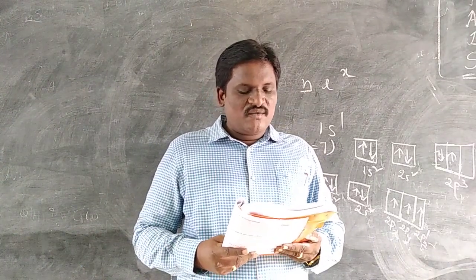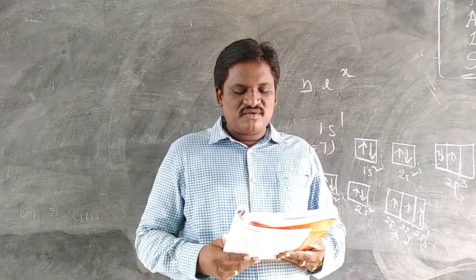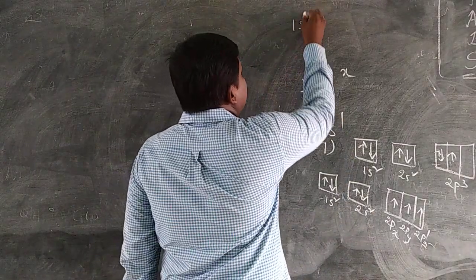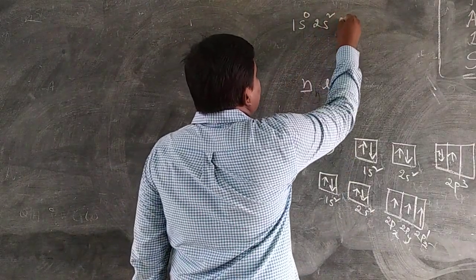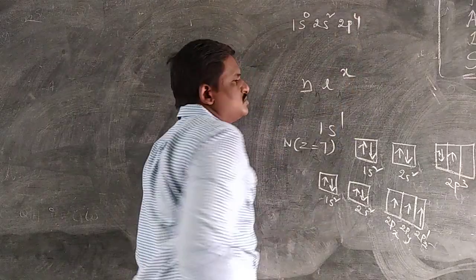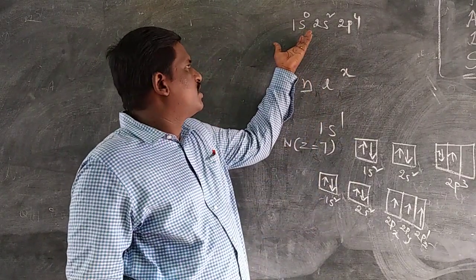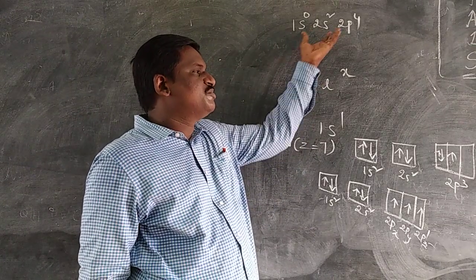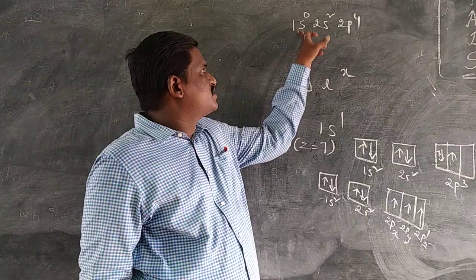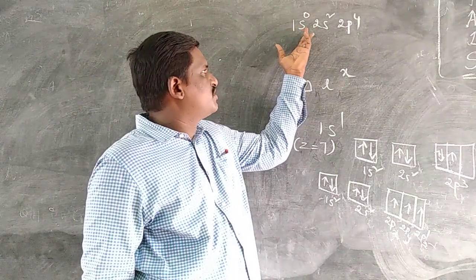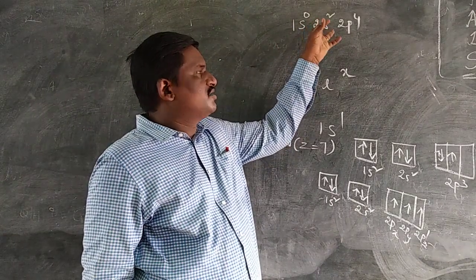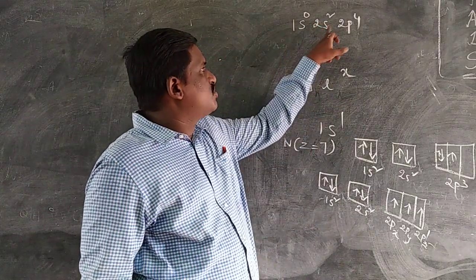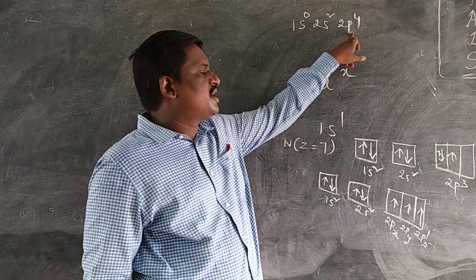Next: which rule is violated in the electronic configuration 1S0, 2S2, 2P4? This violates the Aufbau principle. The Aufbau principle means the lower energy level should be filled first. Here, 1S0 means the lower energy level is not filled first — you are directly going to 2S2. That is why the Aufbau principle is violated.